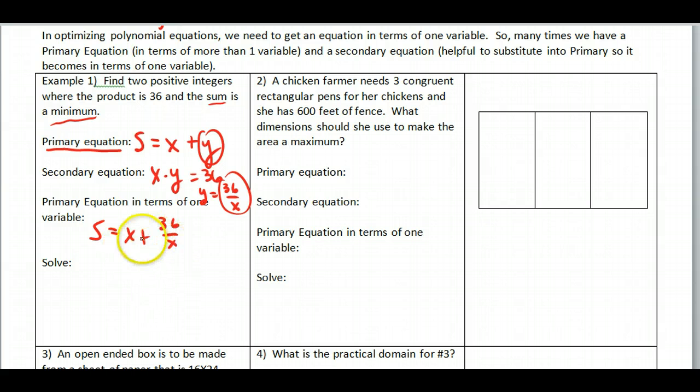So the primary equation in terms of one variable would be x plus 36 over x. Now how do we solve this out? Well we're going to use our calculus. So we take s prime is equal to 1 plus, and this is 36x to the negative 1. I always have to write this for myself, so I get negative 36x to the negative 2.